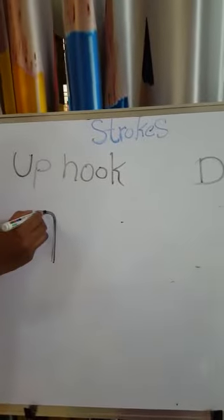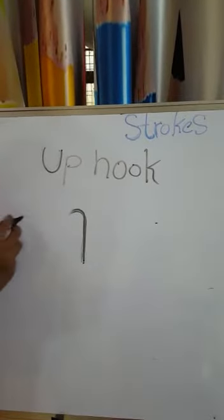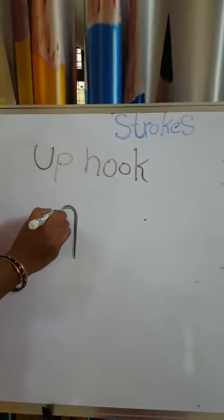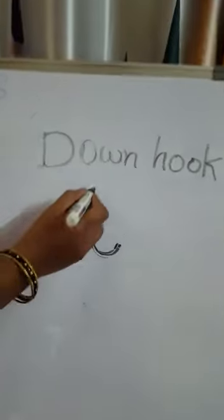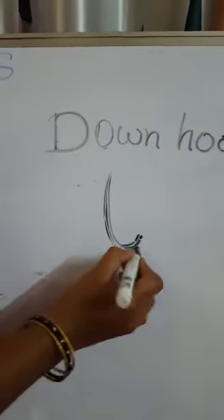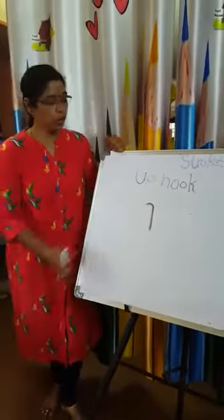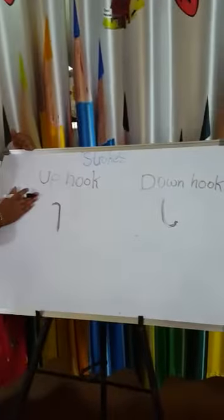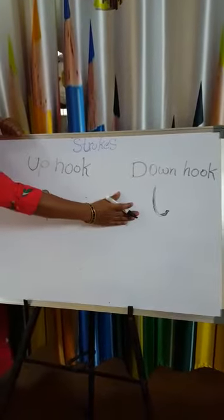The curve towards up is called up hook. The curve towards down is called down hook. Up hook curve, down hook.